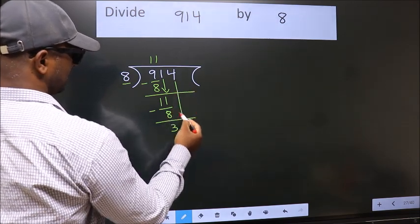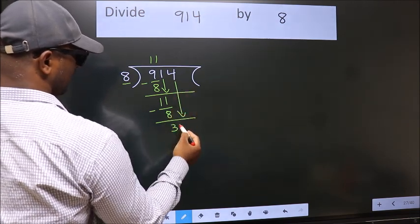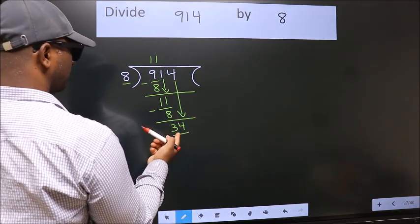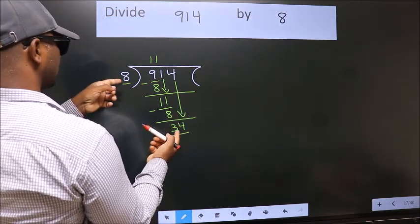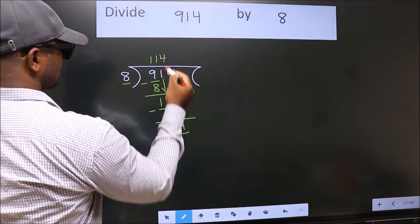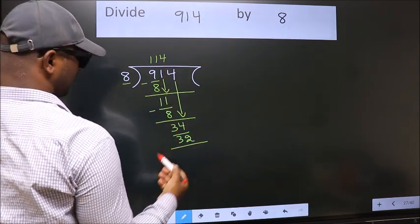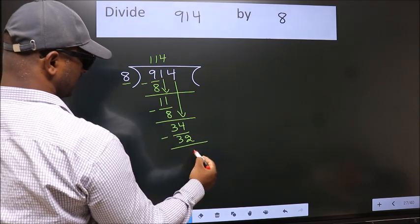After this, bring down the beside number. So, 4 down. So, 34. A number close to 34 in 8 table is 8 fours 32. Now, we subtract. We get 2.